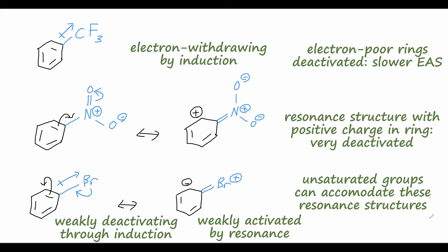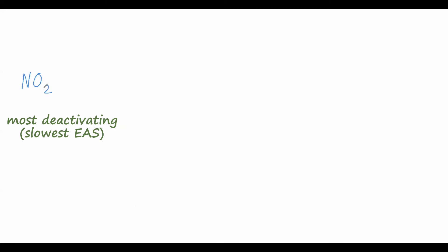Now that we've learned why these effects happen, let's write down the most common substituents on benzene rings and how activating or deactivating they are. Starting with the most deactivating: the nitro group causes the slowest EAS reactions, followed by the trifluoromethyl group through induction, then a carboxylic acid or ester group where the C=O double bond withdraws electron density by resonance. Then the halides, such as chlorine, which are very weakly deactivating.